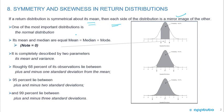One of the most important distributions is the normal distribution, where we have symmetry. In a normal distribution, the mean equals the median equals the mode, and that equals zero — that's really important, I put that in bold. It is completely described by two parameters: its mean and its variance. These are properties of a normal distribution.